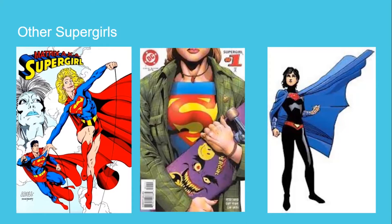There is a fifth Supergirl, but we're not going to get into her today because she could get her own episode — and that's Power Girl. She's from Earth-Two. She is a more mature Supergirl — her outfit alone is more mature — and she's a little bit older than all the other Supergirls. These others are mostly teenagers, whereas Power Girl is an adult. She's best friends with Huntress, who is Catwoman and Bruce's daughter on that particular Earth, and they fight crime together and take no prisoners.